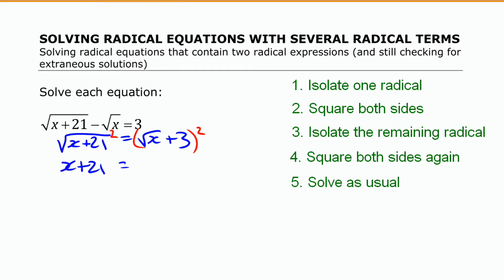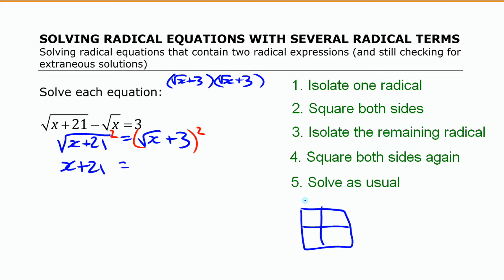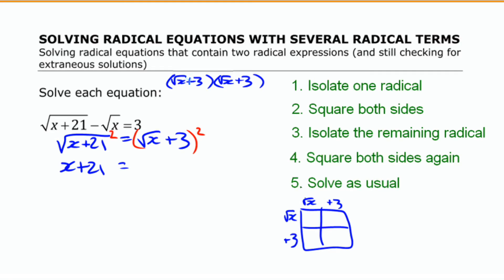I can't just square each piece separately because it's two terms. You can write it out as square root of x plus 3, times square root of x plus 3, and multiply it out — or use the box method for multiplying binomials, whichever you prefer. Root of x times root of x gives x. Then 3 times root of x and another 3 times root of x gives 6 root of x. And 3 times 3 is 9.